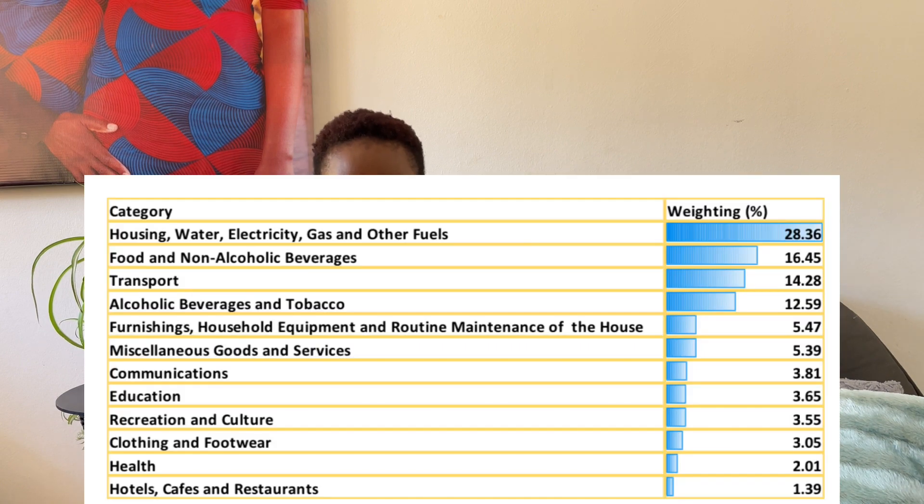Those goods then become what is used to calculate the CPI index of any given economy. What they do is check the price movement of those essential goods and calculate what is called the CPI index, or inflation. If you want to find out what is in the Namibian basket, you can Google it — Namibian economists have written a thing or two on what they use to calculate inflation.